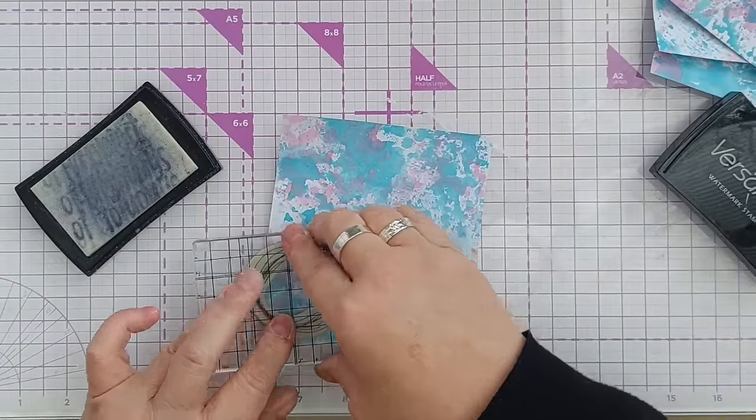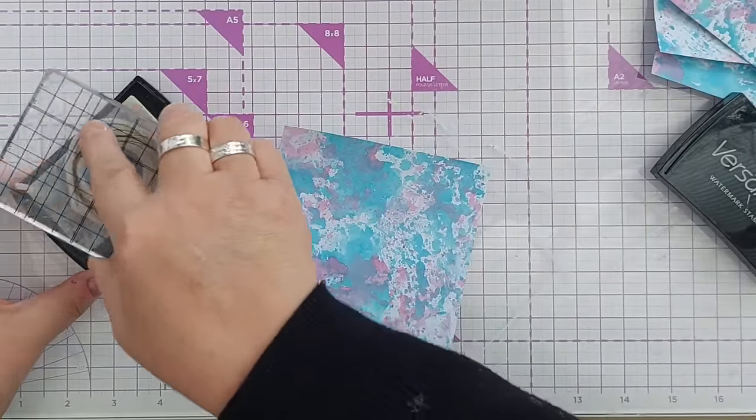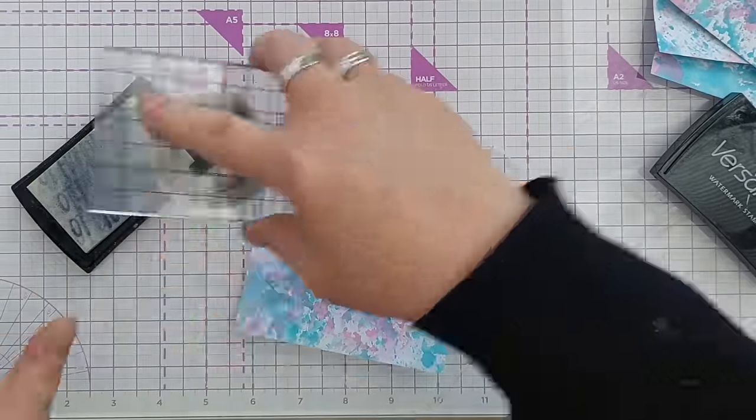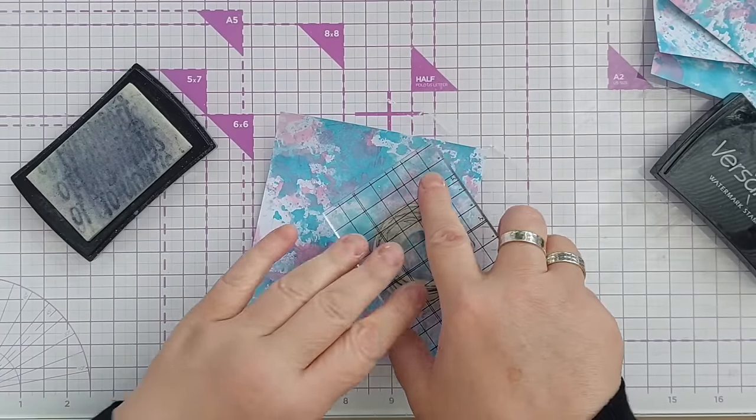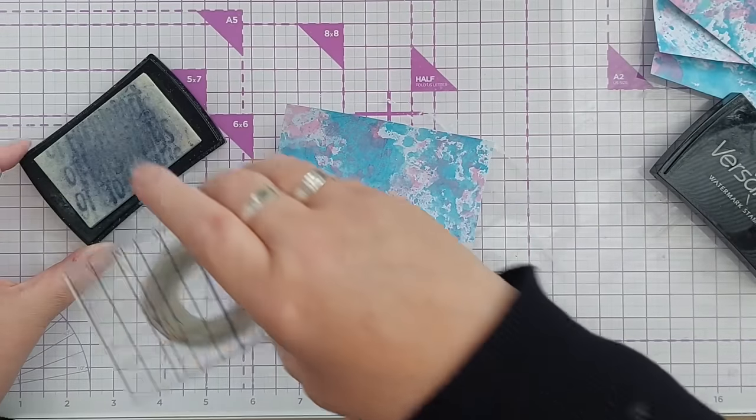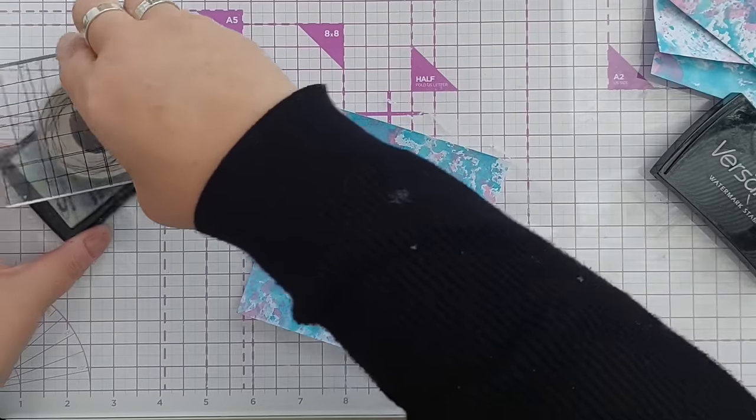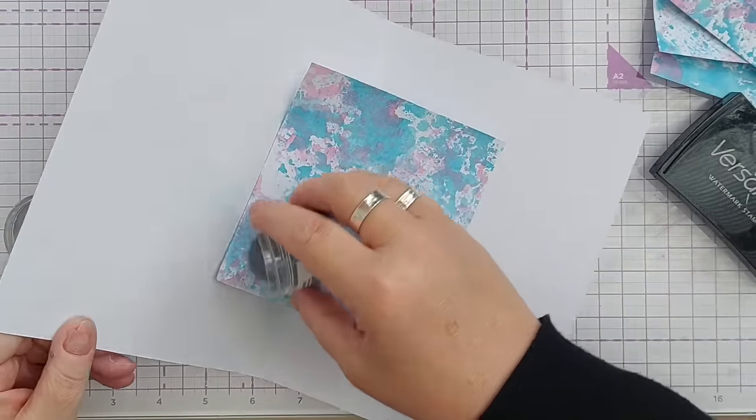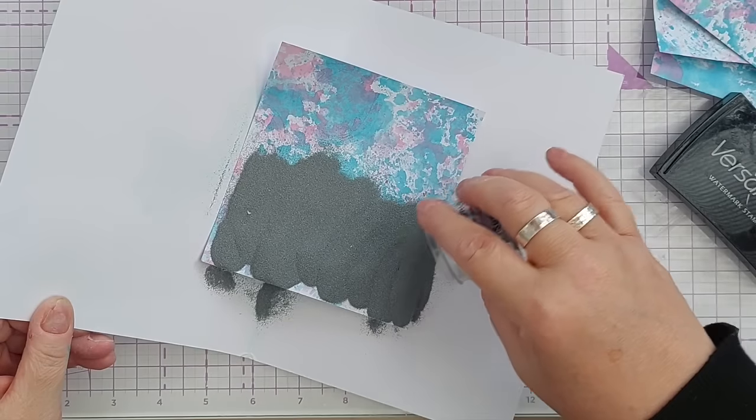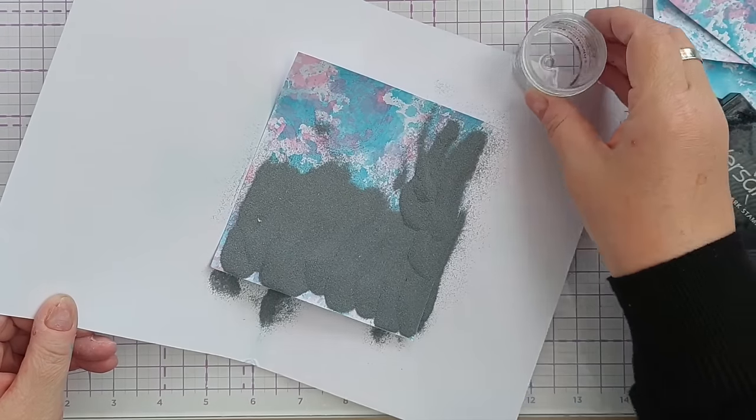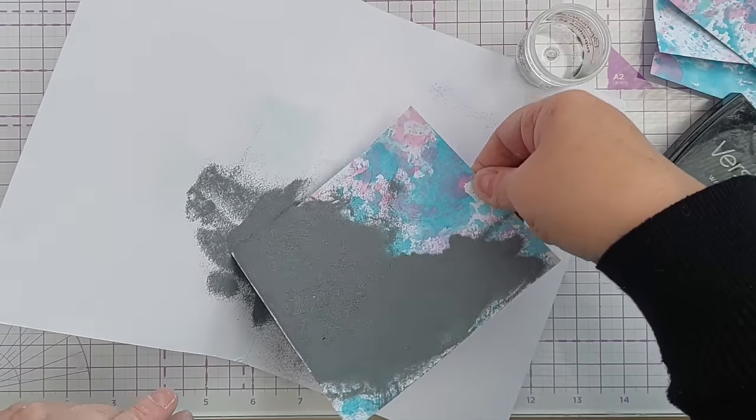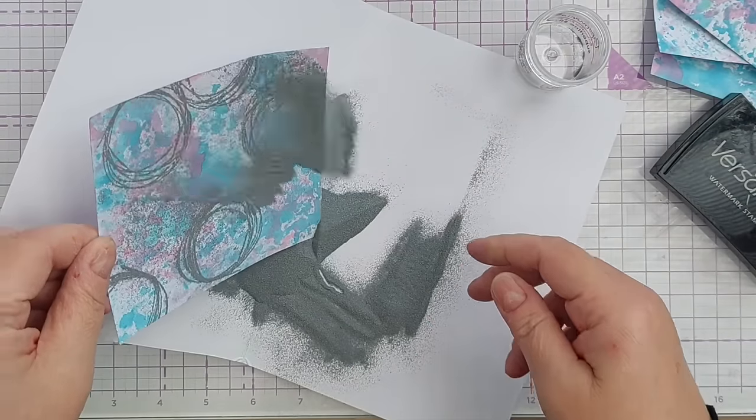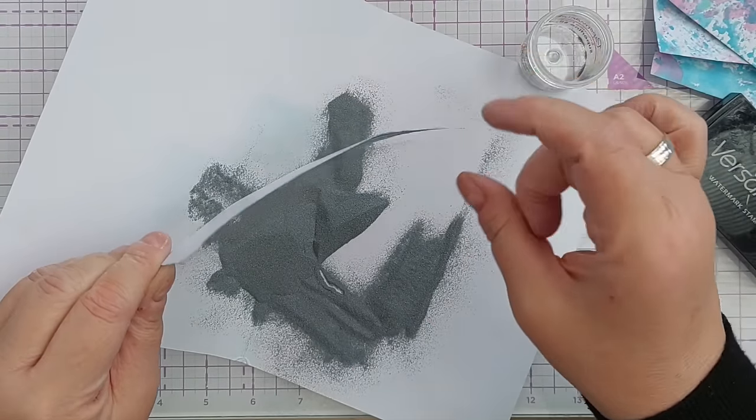All I'm going to do is stamp on each piece like this, doesn't matter if they overlap, just want to have a good distribution. I'm using superfine silver embossing powder which I think will look nice with the blue and the pink, and it's superfine so it picks up the detail really well in that stamp.